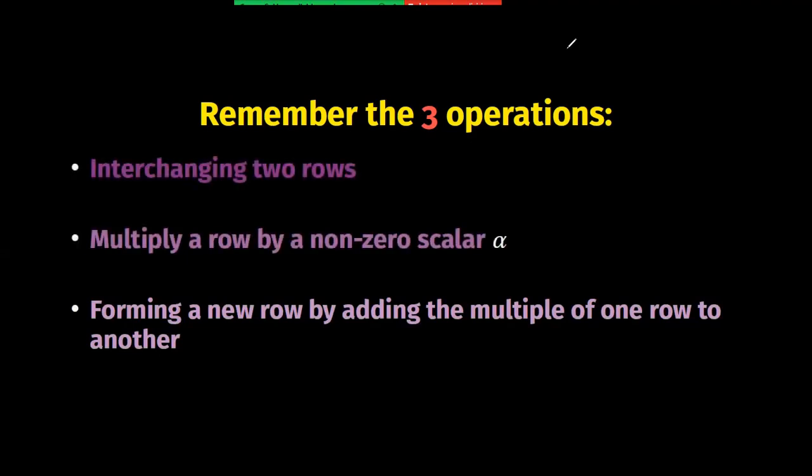In this example all three operations will be used. So everything will be clear. The reason why we are allowed to use only these three operations goes back to the link between matrices and linear systems. You will find the link of the video explaining all these in the description below. Let's go right into the action.